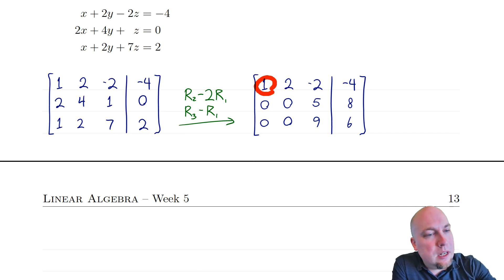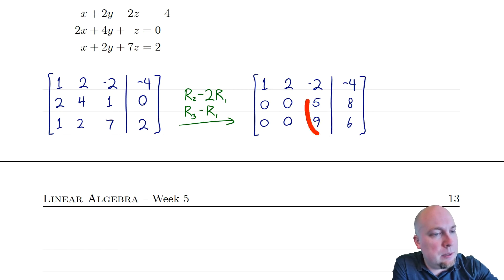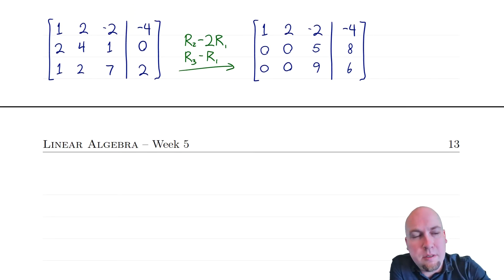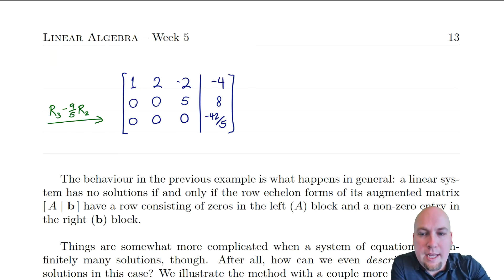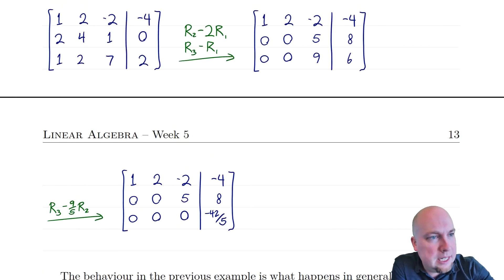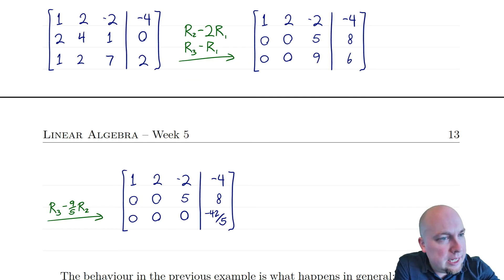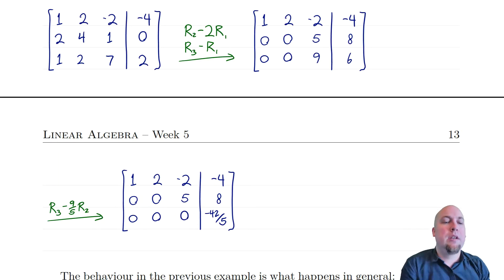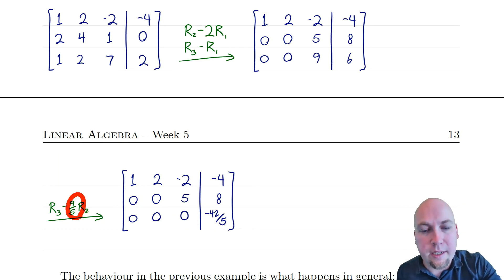Now my leading entries are here and here, and I don't like that there's a non-zero entry below this leading entry — there's another leading entry right below a leading entry. So I've got to zero out this entry, and I'm going to do the natural row operation: some multiple of row two added to row three. When I work out what multiple it's got to be, I'm going to do row three minus nine-fifths row two. I've got nine here; I want to turn this five into a nine so that when I subtract it I get zero. So multiplying five by nine-fifths gives me nine, and nine minus nine is zero. That's why I'm using that scalar — I want a zero down here.